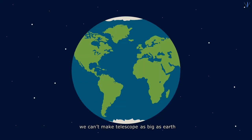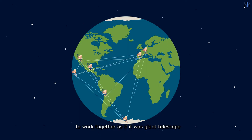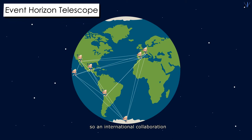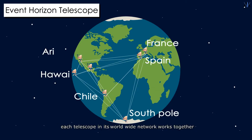We can't make a telescope as big as Earth, but one thing we can surely do is to connect telescopes around the world to work together as if it was a giant telescope. So an international collaboration called Event Horizon Telescope was created, which is capable of resolving structure on such a massive scale. Each telescope in its worldwide network works together, collecting thousands of terabytes of data. This data is then processed to create the actual image.